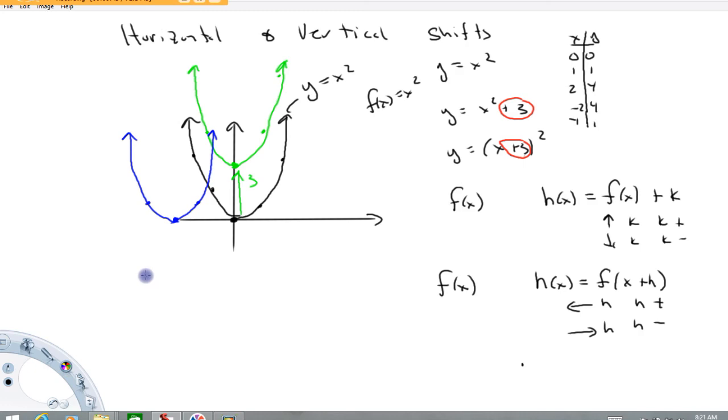Some quick examples of that. So let's look at the function, maybe f of x equals x cubed here. If I had a new function g of x, that's equal to x cubed minus 5, this new function would be this one shifted down five units.